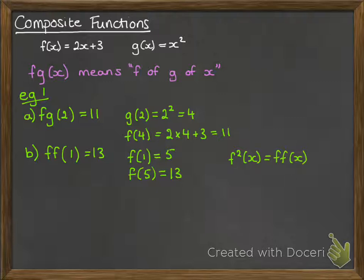Just bear in mind, if you see something written like f squared, that means f of f of x, and f cubed would be 3 f of x. We could also do g of f of 3. That means we're going to work out f(3) first, which is 9, and then put that into g, which gives us 81.